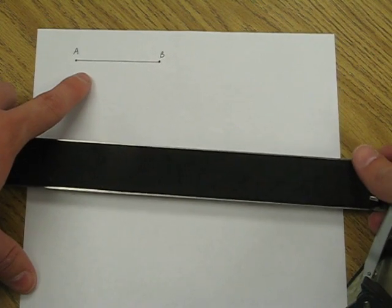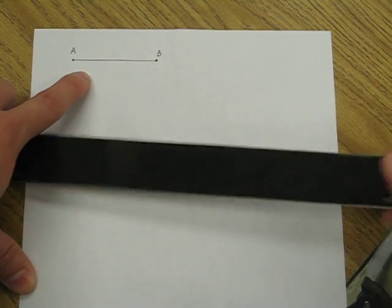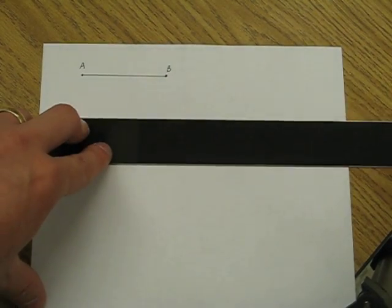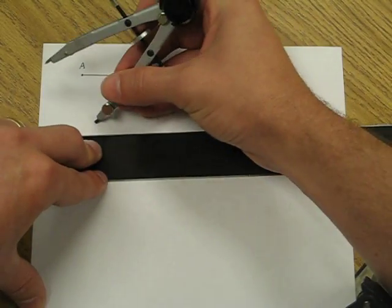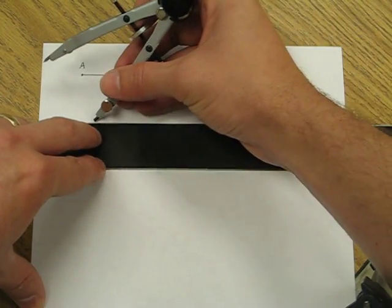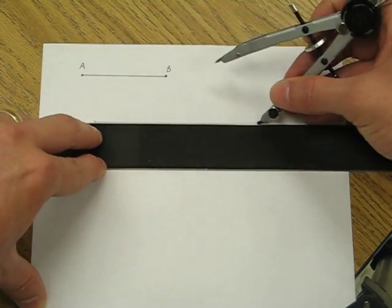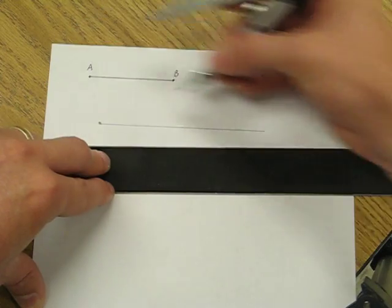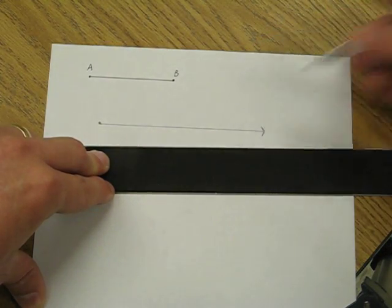So we have a segment that needs to be copied or another one made congruent to it. Our first step would be to make a ray that has a length longer than our segment to be copied. So I put my fixed point of a ray here and I make it longer. There's my arrow.